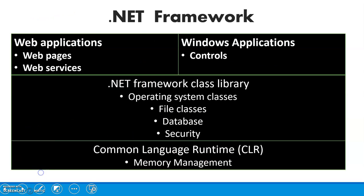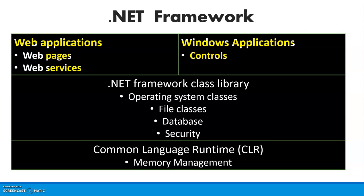The .NET Framework basically contains three layers. The first is the application layer, where we can develop web applications and Windows applications. In Windows applications we have controls and many other things, and in web applications we have web pages and web services. This first layer is where we actually work with the GUI or interface. In the second layer of the .NET Framework, we have inbuilt class libraries.